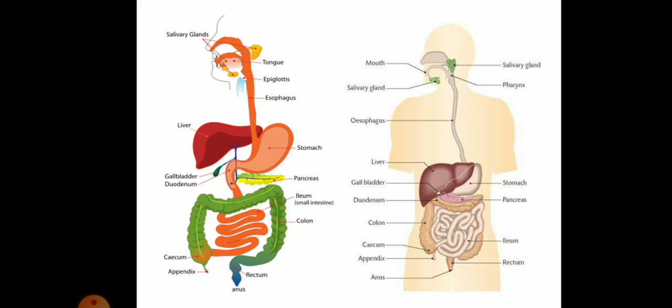In the liver, there is a gallbladder which secretes the bile juice. And the pancreas secretes the pancreatic juice. This food, after the stomach, enters the small intestine.